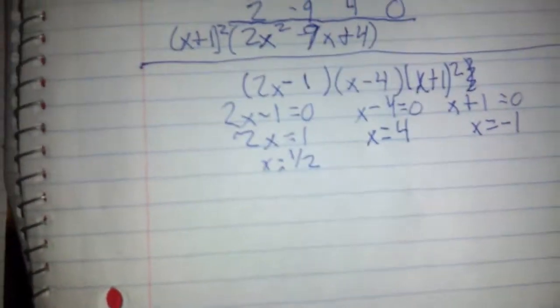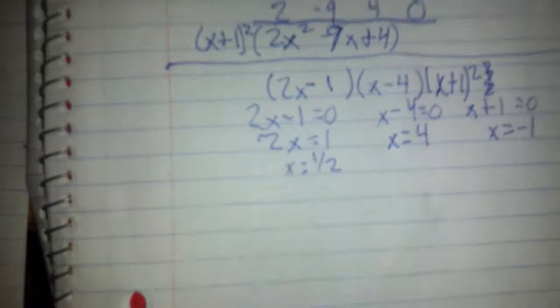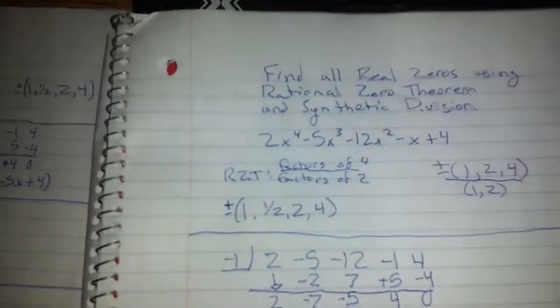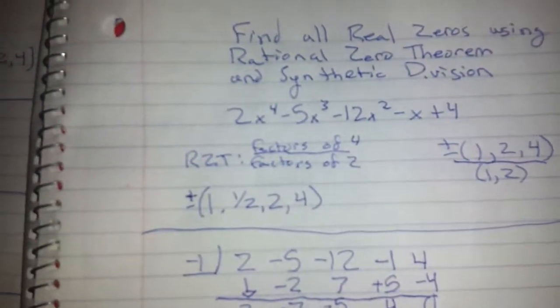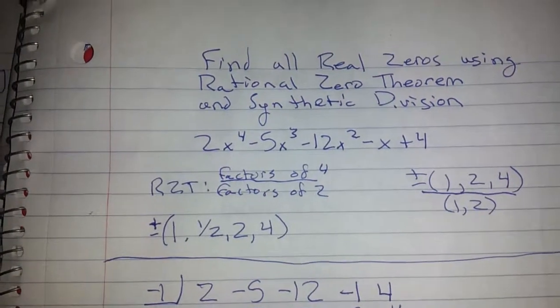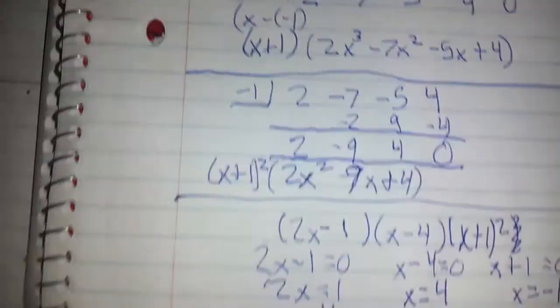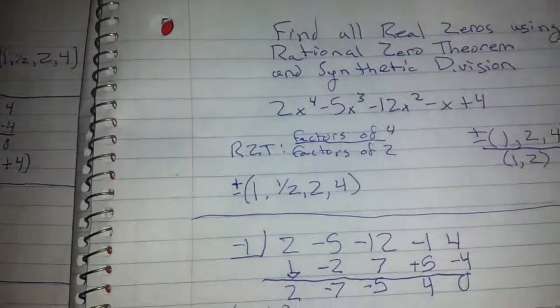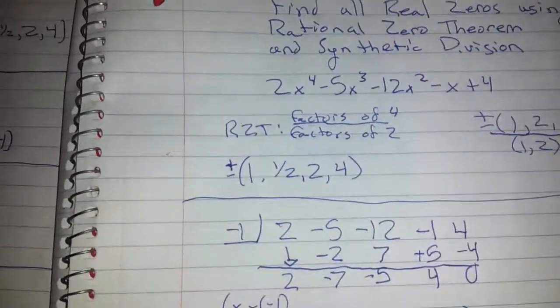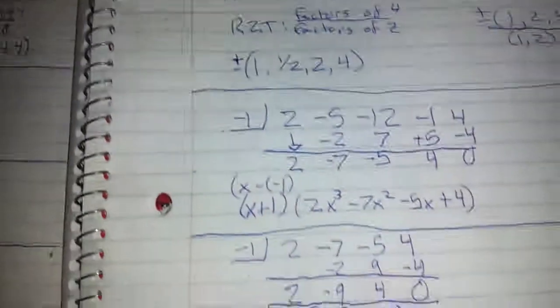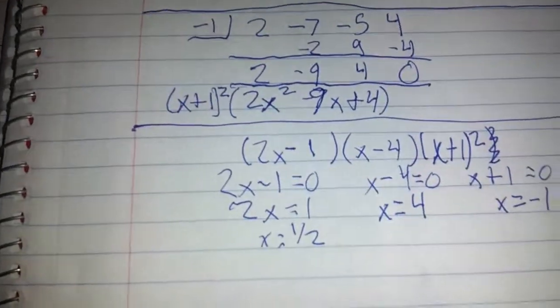And that completes our problem using synthetic division and the rational zero theorem. We find we have three zeros, which fits under the degree of 4. So we don't have more than four zeros. Thanks for watching.